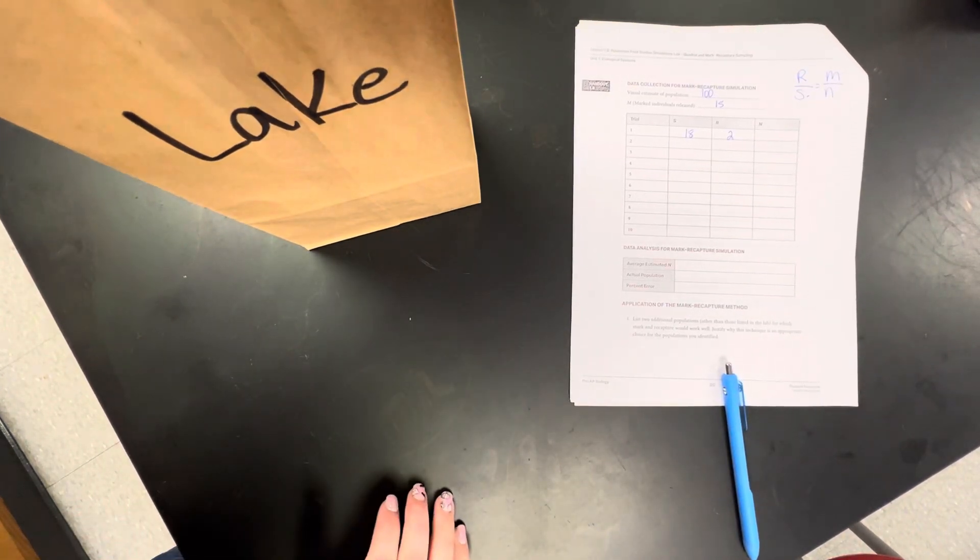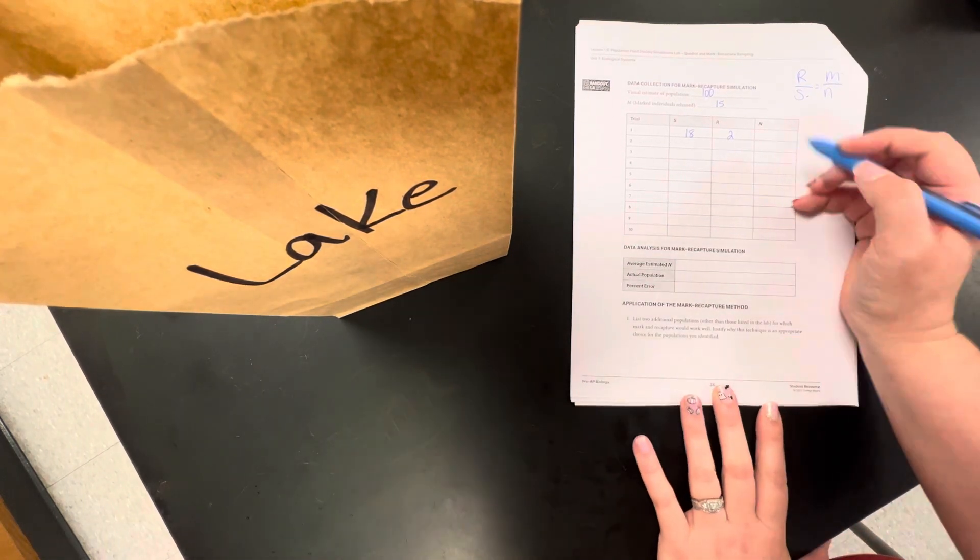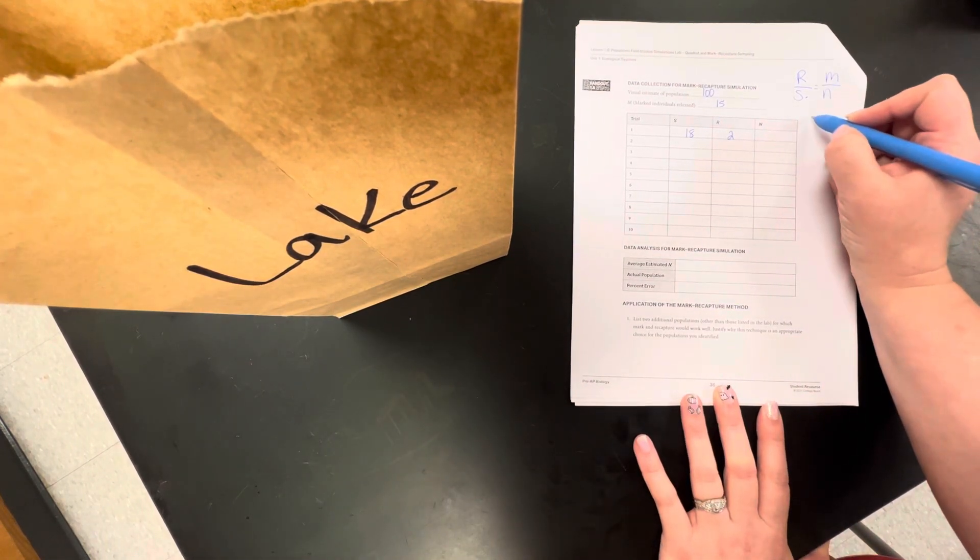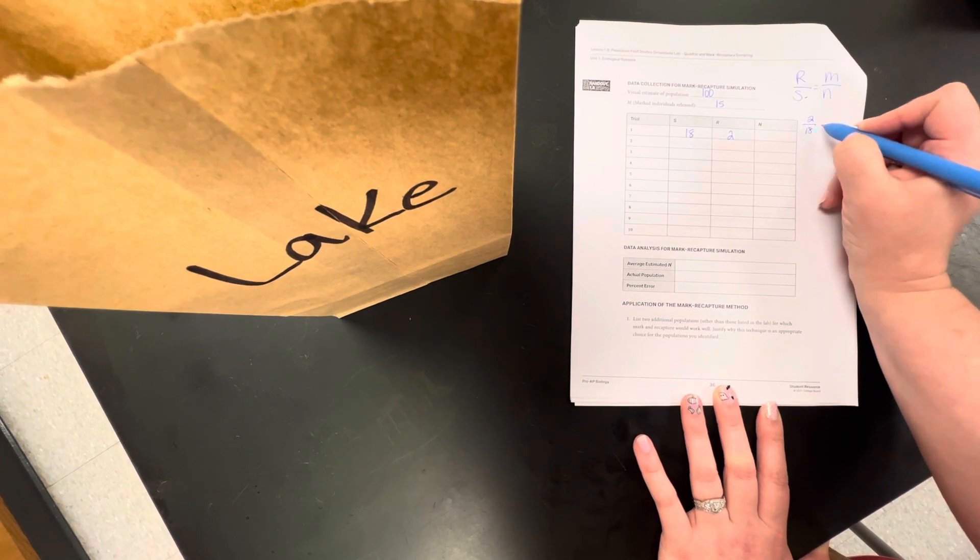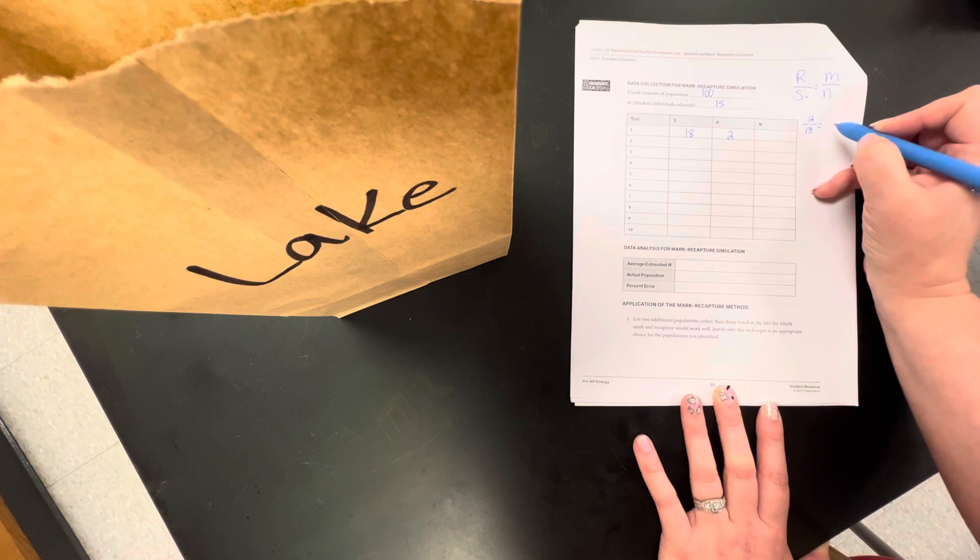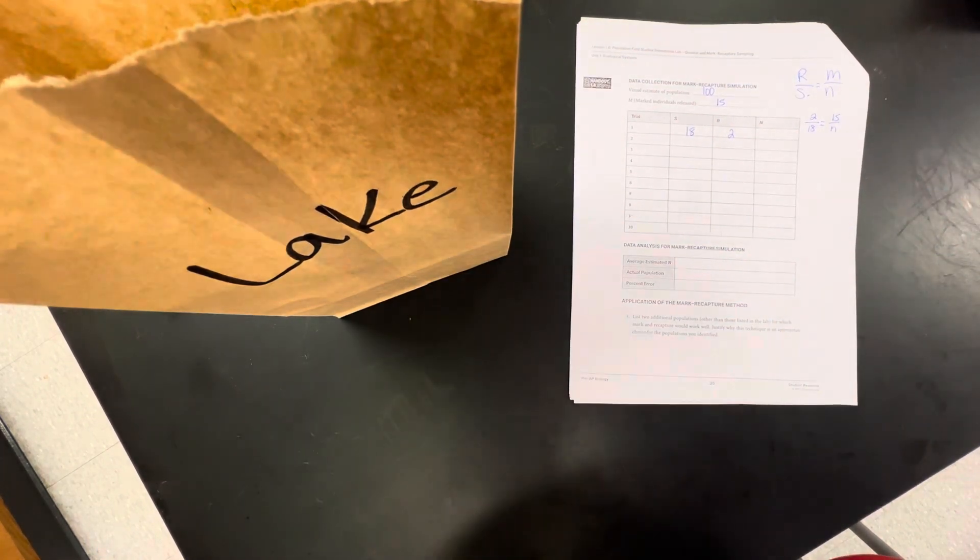And then I will just release them back into our fake little lake. So what we are going to be doing for each trial is calculating N. So if I have R is 2, S is 18, set that equal to M which is 15 and it will be 15 every time.